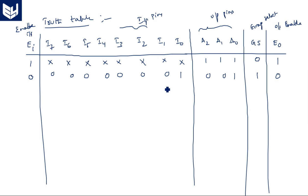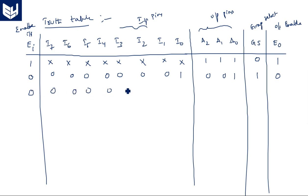When the enable input is activated, the enable output pin is also activated; otherwise both are not activated. When all inputs from I7 down to I1 are zero and I0 is one, the output value to consider is 0-0-1.